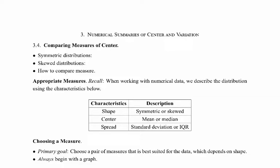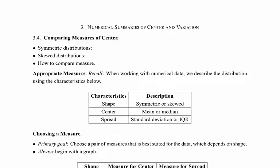Section 3.4 is titled Comparing Measures of Center. This summarizes what we've talked about in the last two sections — how we handle whether the distribution is skewed or symmetric, and what we would do if we wanted to make comparisons.